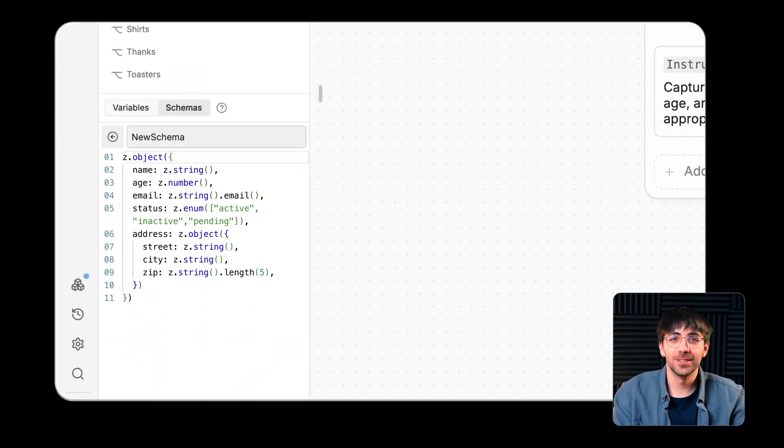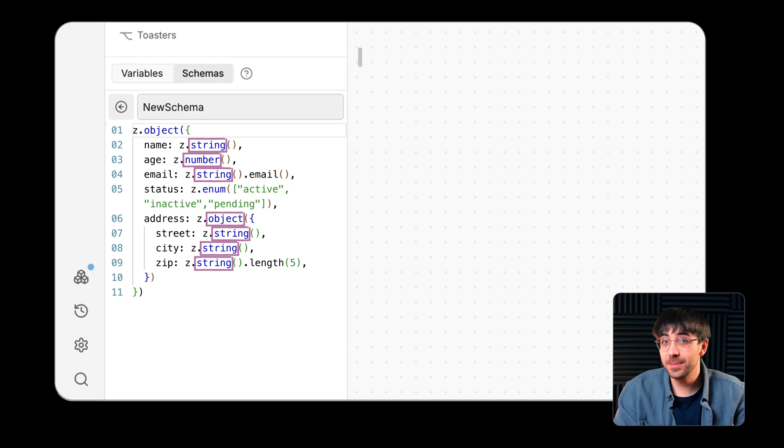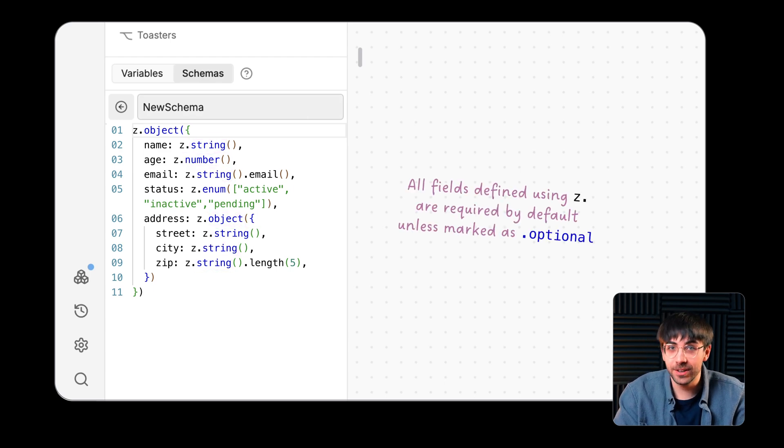Schemas are built using the JSON schema and can define types like string, number, object, and array, required fields, enum values, so predefined options, or nested structures.